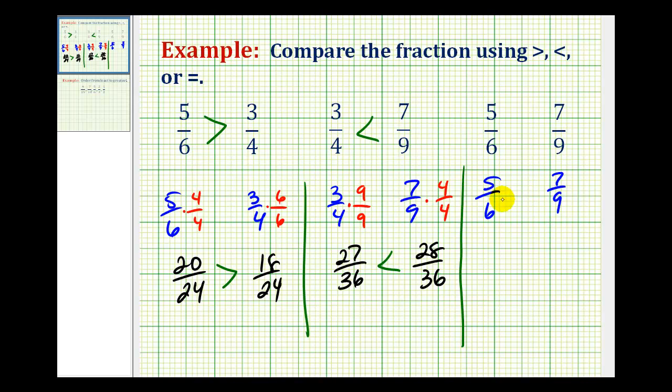Which means we'll have to multiply this first fraction by 9/9, and the second fraction by 6/6. So 5/6 is equivalent to 45/54ths, and 7/9 is equivalent to 42/54ths.